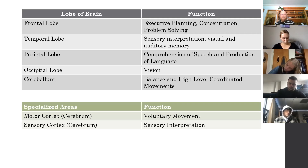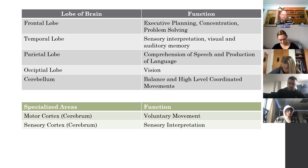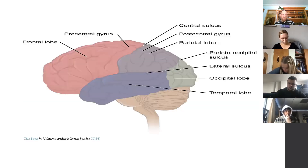The cerebellum handles balance and high-level coordinated movements. Within the motor cortex and sensory cortex of the pre- and post-central gyri: the motor cortex controls voluntary movement, and the sensory cortex controls sensory interpretation.